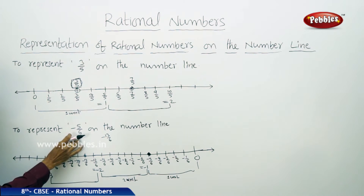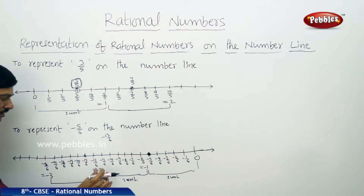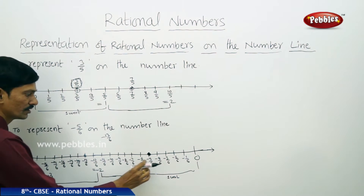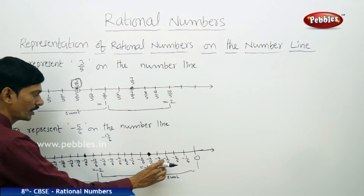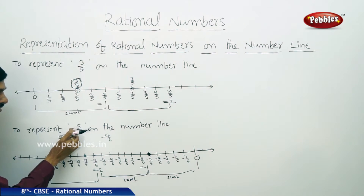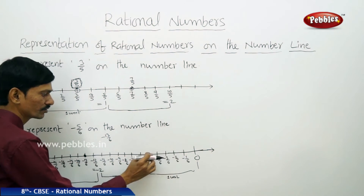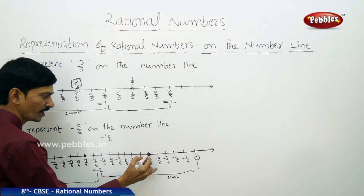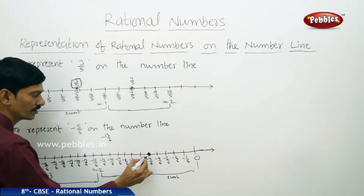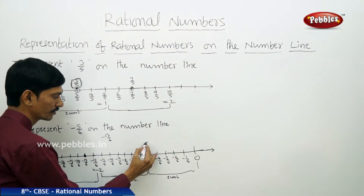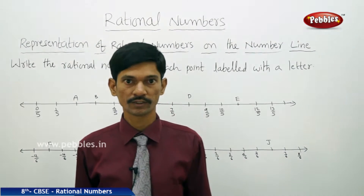In the second question, the denominator is 6, so each unit is divided into 6 equal parts. The numerator tells which part we are considering. Minus 5 means the 5th part to the left of 0, so what is the 5th part left of 0? That is minus 5 by 6. This is the required rational number on the number line.